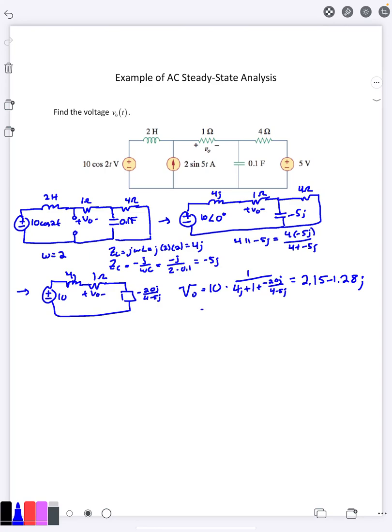And I get 2.15 minus 1.28j. We're going to convert this into polar coordinates. So we're going to get 2.5 angle negative 30.8 degrees. And this means my V0 of t is going to be 2.5 cosine 2t minus 30.8. So that gives me my first V0 from the first source.